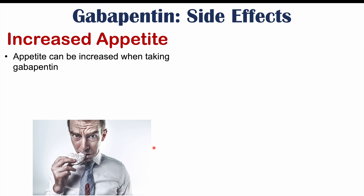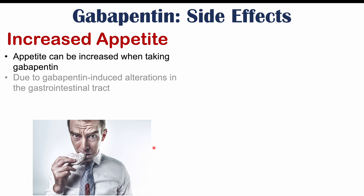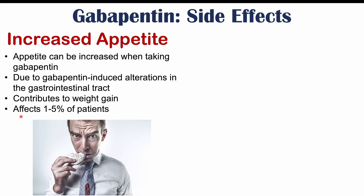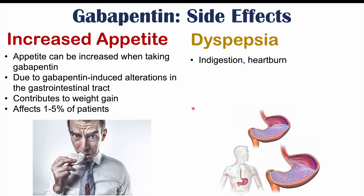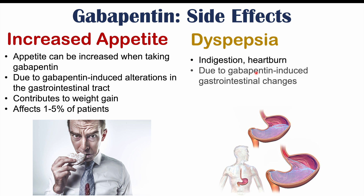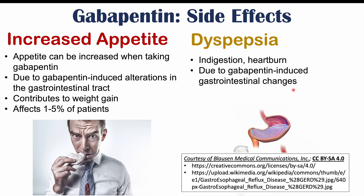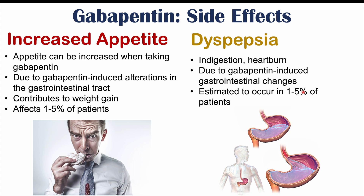Increased appetite can occur when taking gabapentin due to gabapentin-induced alterations in the gastrointestinal tract, as GABA effects can occur in the GI system. This contributes to weight gain as well and is estimated to affect 1 to 5% of patients. Dyspepsia — indigestion or heartburn — is also due to gabapentin-induced gastrointestinal changes, occurring in an estimated 1 to 5% of patients.